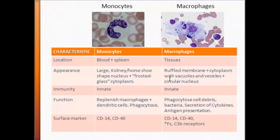The macrophage surface marker, similar to your monocyte, has the CD14 and CD4 cell surface markers. But the macrophage also has a few extra receptors. Some important ones include the Fc receptor, which binds to your antibody. Remember, our antibody has an Fc portion and a Fab portion — the Fab portion is where antigen binds, and the Fc portion is where it binds to the macrophage itself.